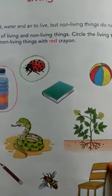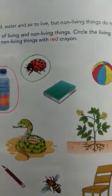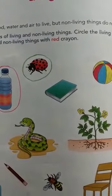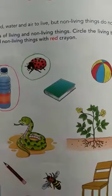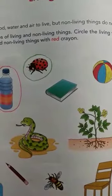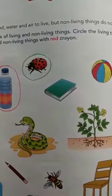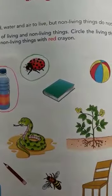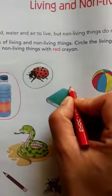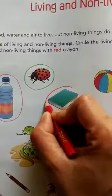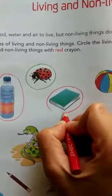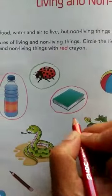The next picture is Book. Is Book living or non-living? Book is non-living because it has no life. So we circle it with red color.